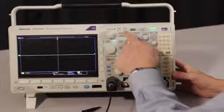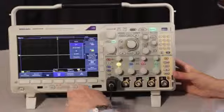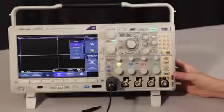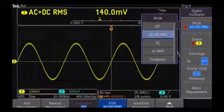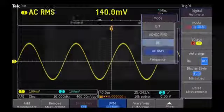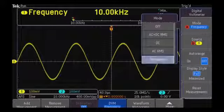The DVM menus are easy to access through the front panel measure button. Quickly and easily view common voltage measurements: AC plus DC root mean square, DC only, or AC RMS, or constantly monitor the frequency of a critical signal.